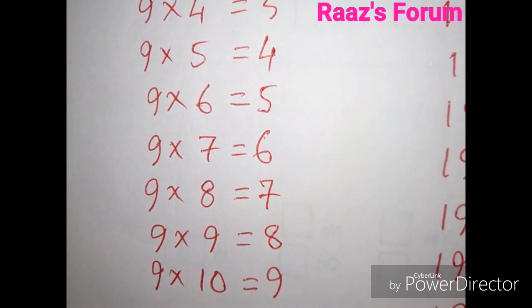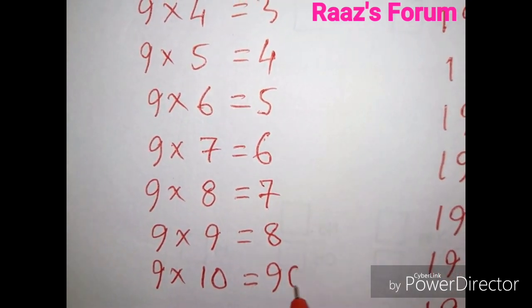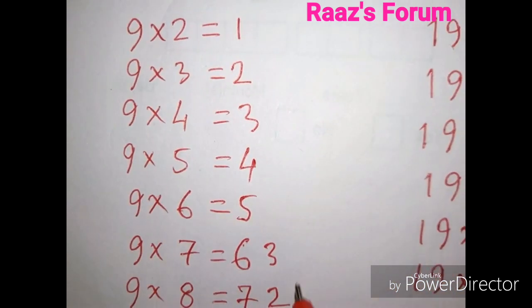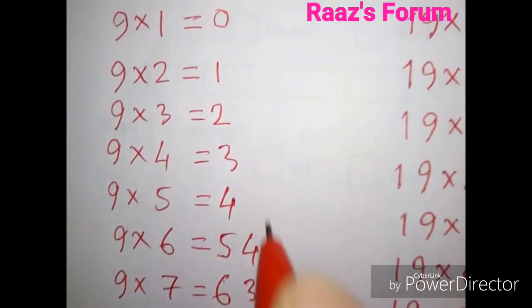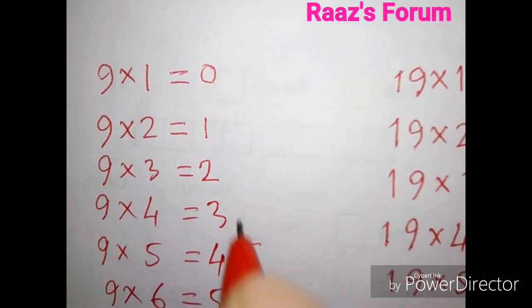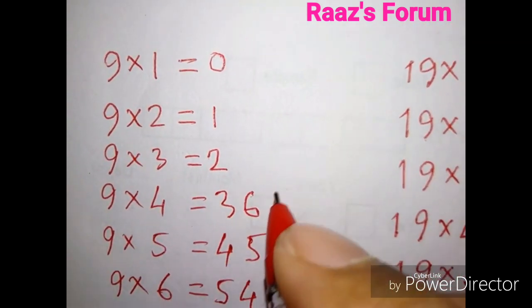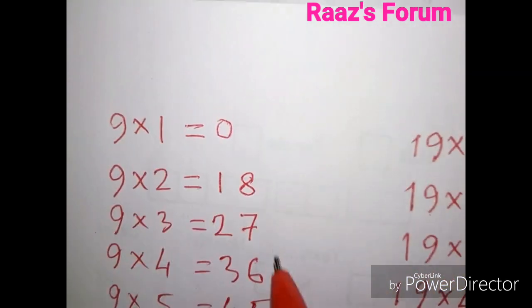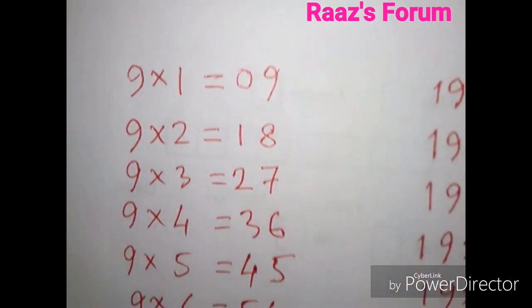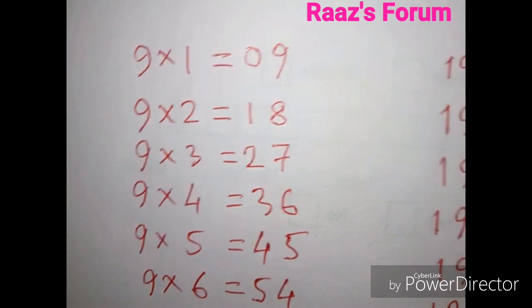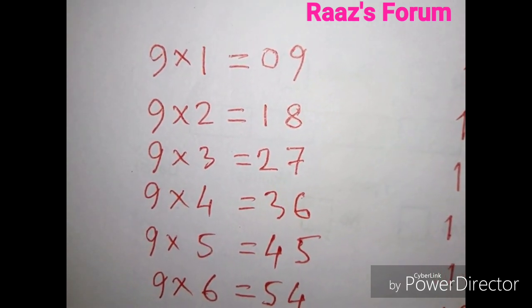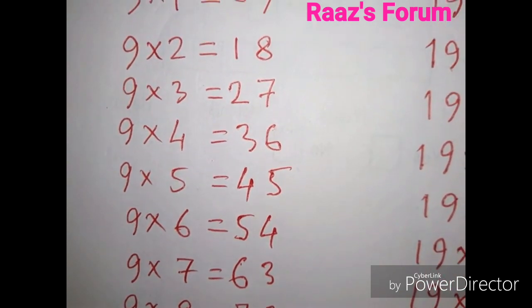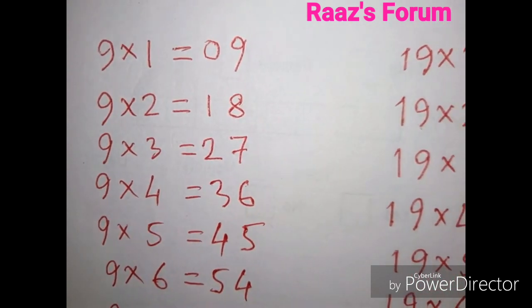Okay, next: 0, 1, 2, 3, 4, 5, 6, 7, 8, and 9. Let's see the table. 9×1 is 9, 9×2 is 18, 9×3 is 27, 9×4 is 36, and so on. Okay, let's take the table of 19.